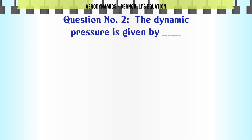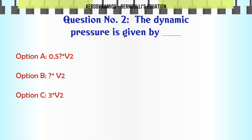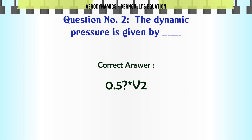The dynamic pressure is given by: A. 0.5 ρV², B. ρV², C. 3ρV², D. 5ρV². The correct answer is 0.5 ρV².